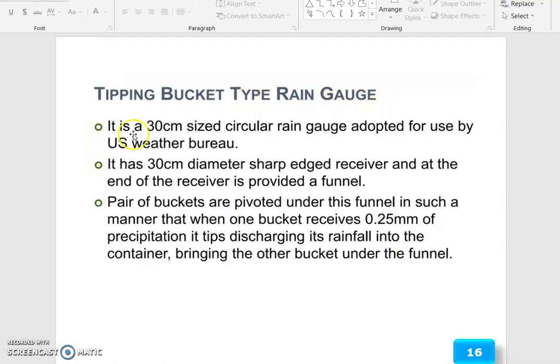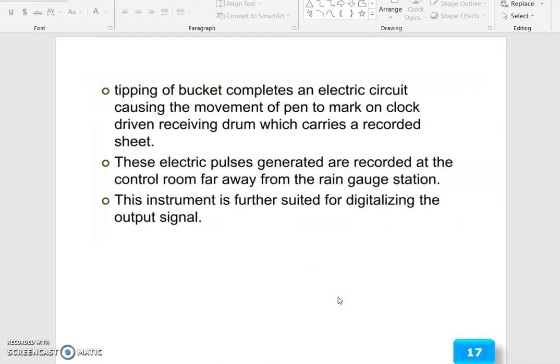Tipping bucket type rain gauge is a 30 centimeter size circular rain gauge adapted for use by US Weather Bureau. It has 30 centimeter diameter, sharp edges, receiver, and at the end of the receiver is provided a funnel. A pair of buckets are provided under this funnel in such a manner that when one bucket receives 0.25 mm of precipitation, it tips, discharging its rainfall into the container, bringing the other bucket under the funnel. The tipping of a bucket completes an electric circuit causing the movement of a pen to mark on a clock-driven recording drum which carries a recorded sheet. This electrical pulse can be recorded at the control room far away from the rain gauge station.